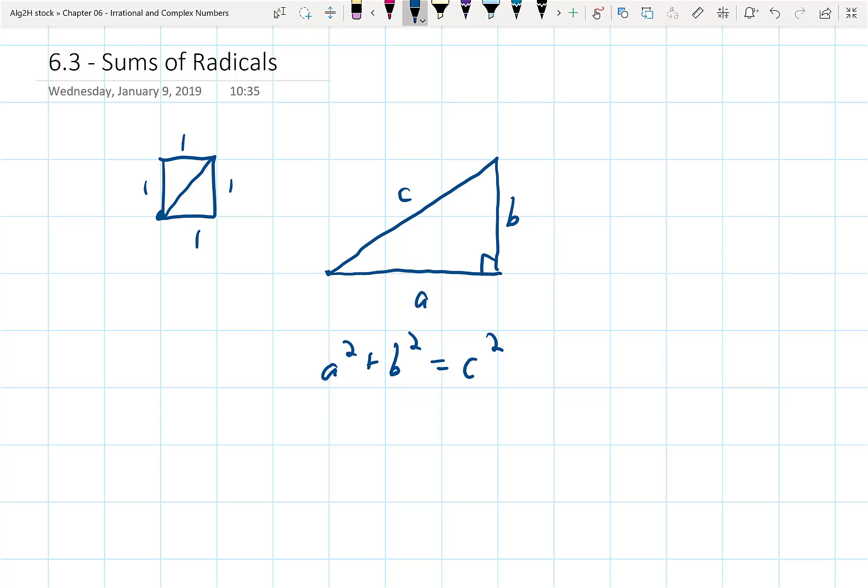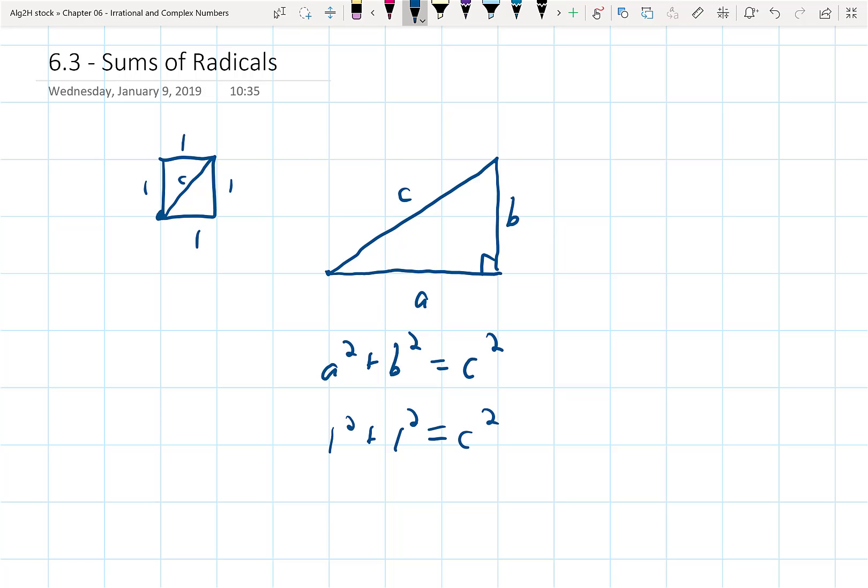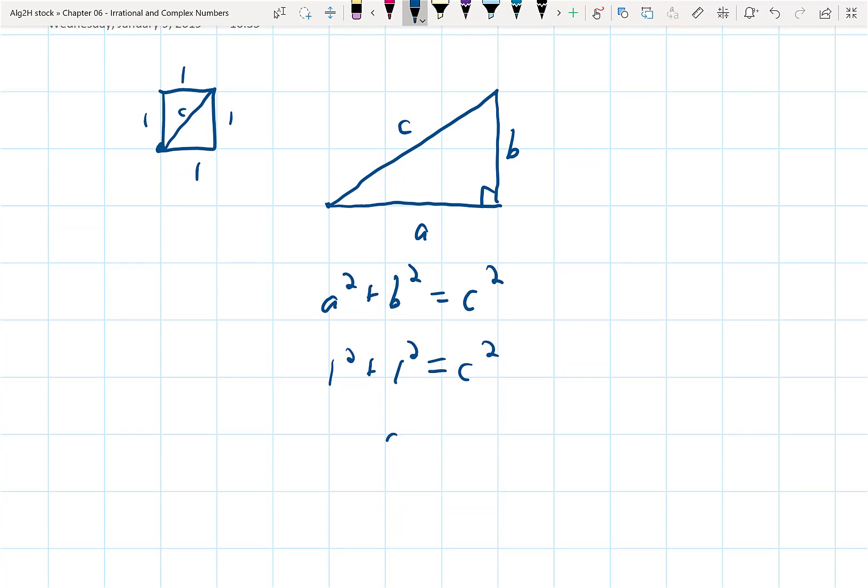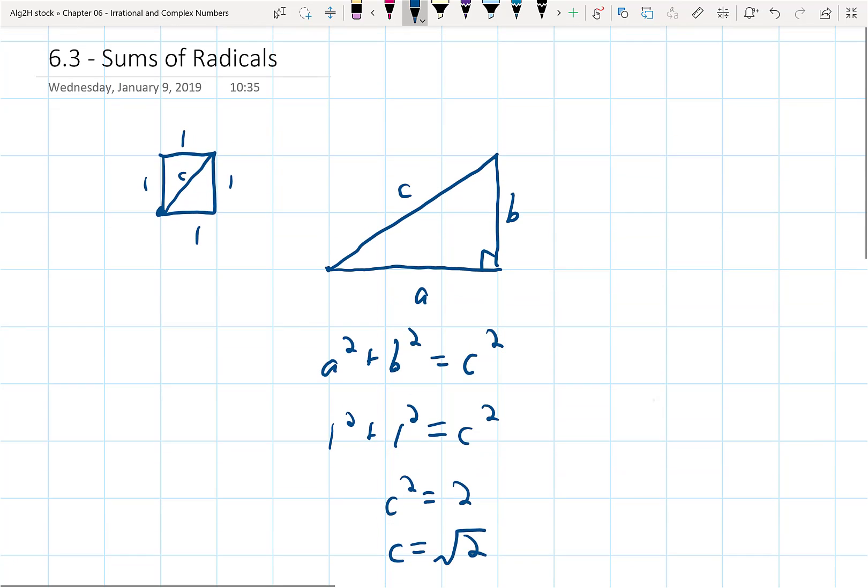So given that, if I do a substitution and let's let this diagonal here be c, I would get one squared plus one squared is equal to c squared, which means that c squared would be equal to 2, or c would be equal to the square root of 2, would not be equal to the negative because I'm talking about a side length.